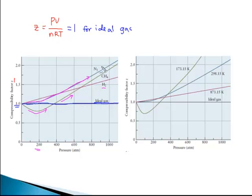The important thing is that most gases deviate from the ideal gas law or the ideal gas equation. At the right-hand side, we have here a similar graph, but this is for a particular gas, which is nitrogen, at different temperatures.